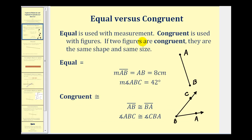Equal is used with measurement. Congruent is used with figures. If two figures are congruent, they are the same shape and the same size. We can use the equal sign when referring to the length of a segment — the length of AB is equal to eight centimeters — and when giving the measurement of an angle, such as angle ABC equals 42 degrees. However, when talking about congruent, we are comparing geometric figures: segment AB is congruent to segment BA, and angle ABC is congruent to angle CBA, where the vertex in both cases is point B. So the big difference is the equal sign is used for measurement, and congruence is used to compare geometric shapes or figures.